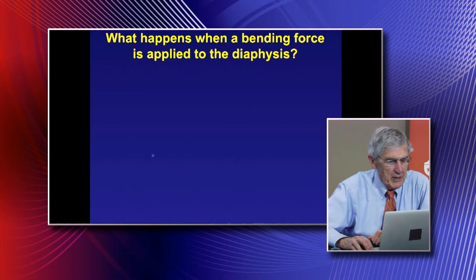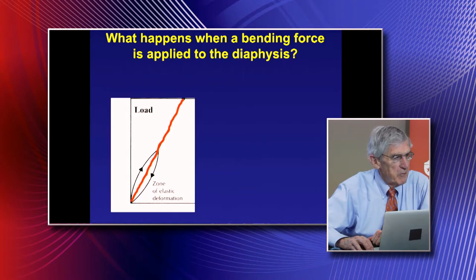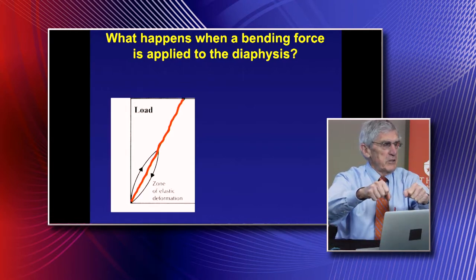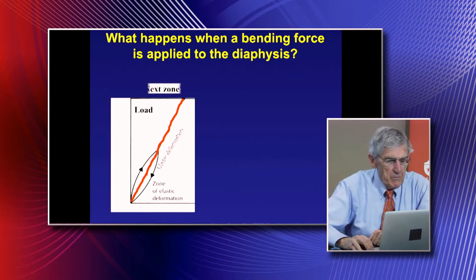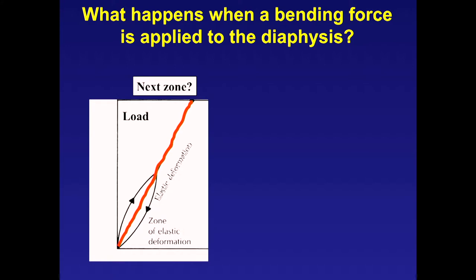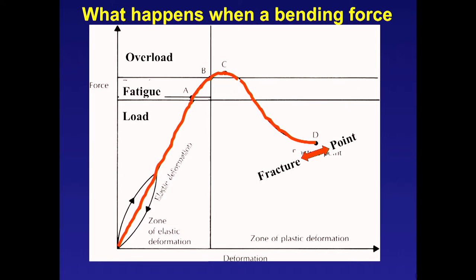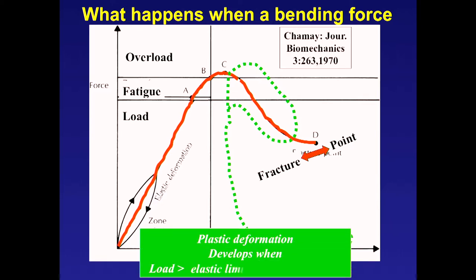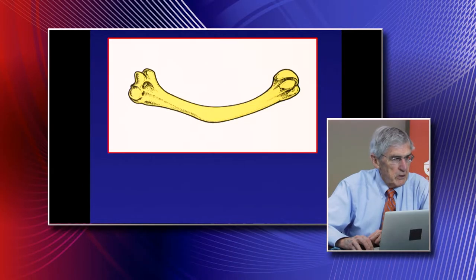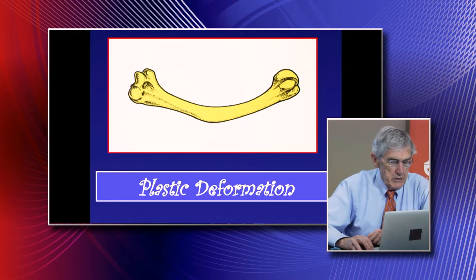When a bending force is applied to the diaphysis, first you have the zone of elastic deformation—bend it and it goes back. Next, plastic deformation: the internal structure is fatiguing. Then it overloads, and finally it fractures completely. If the load exceeds the elastic limit but doesn't quite reach the fracture point, you get plastic deformation—a crooked bone with no visible disruption or displacement of the cortices.